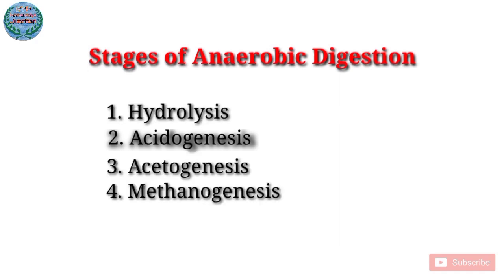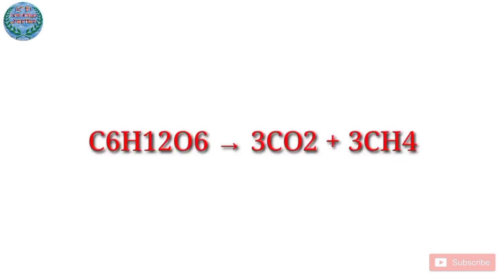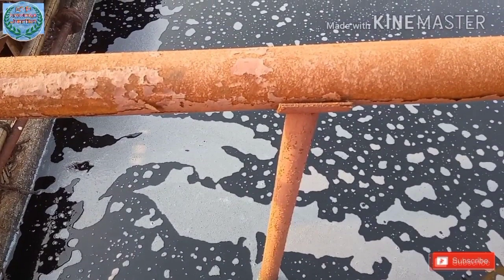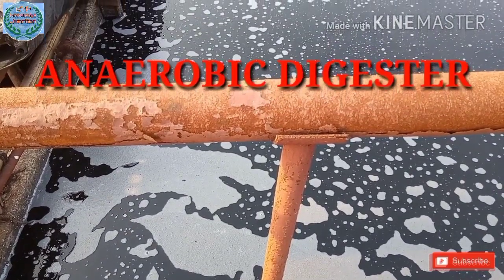Anaerobic digestion is completed in four stages: first, hydrolysis; second, acidogenesis; third, acetogenesis; and fourth, methanogenesis. The overall process can be described by a chemical reaction where organic material such as glucose is biochemically digested into carbon dioxide and methane by anaerobic microorganisms.